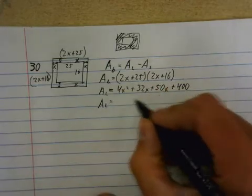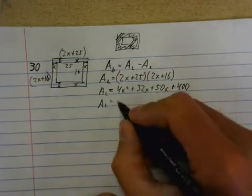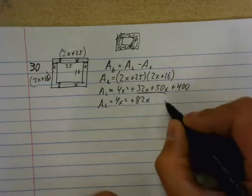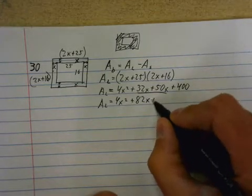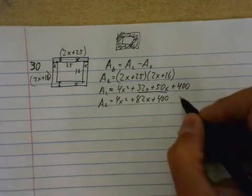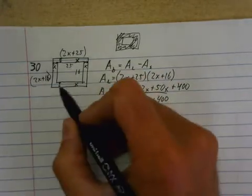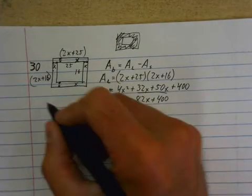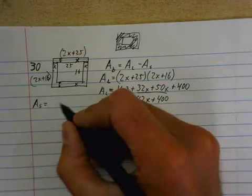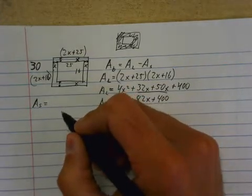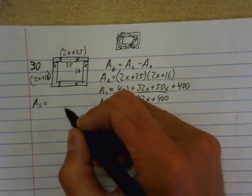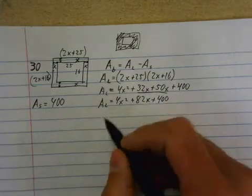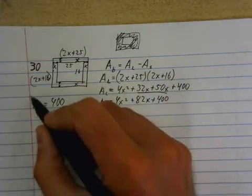Not quite done yet. I'm going to simplify the two middle terms. So: 4x squared plus 82x plus 400. That's the area of the large. Now I subtract the area of the pool. Area of the small rectangle is just 16 times 25, which is 400.